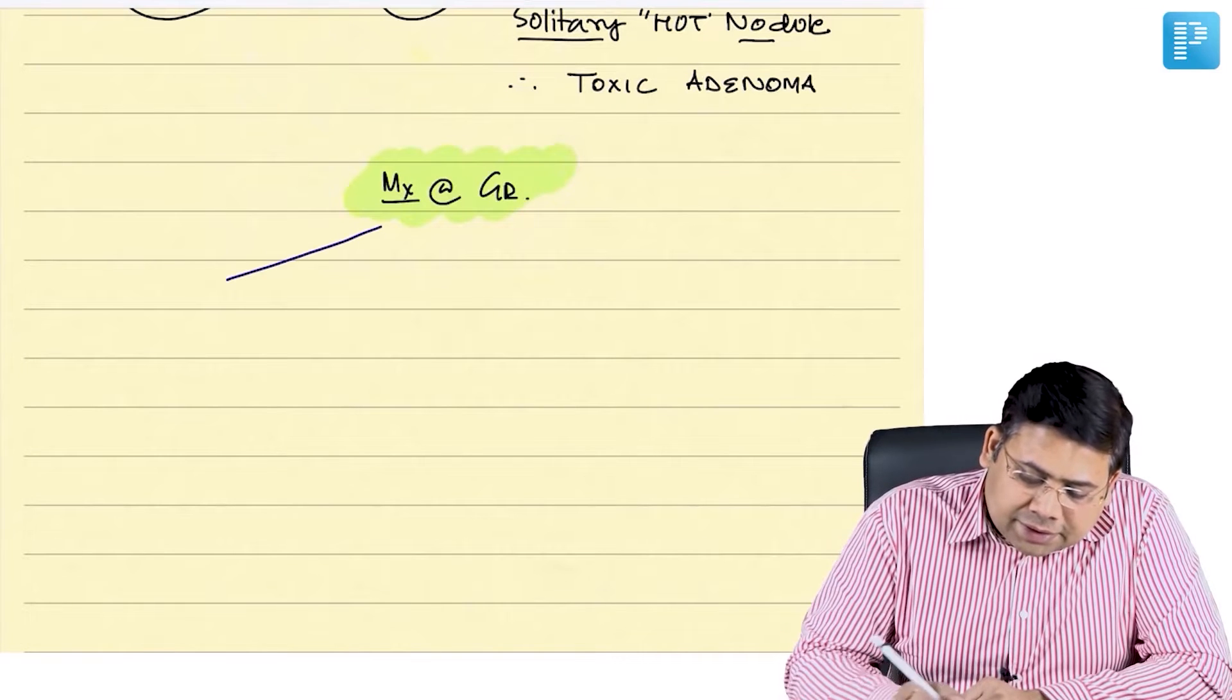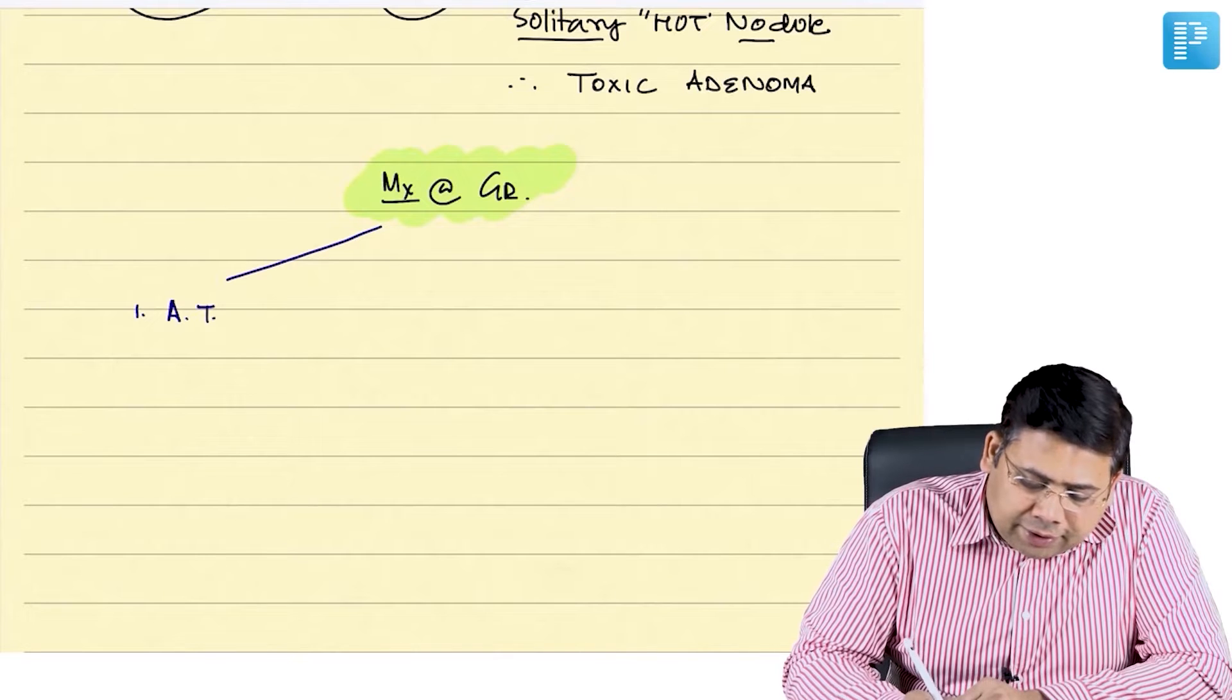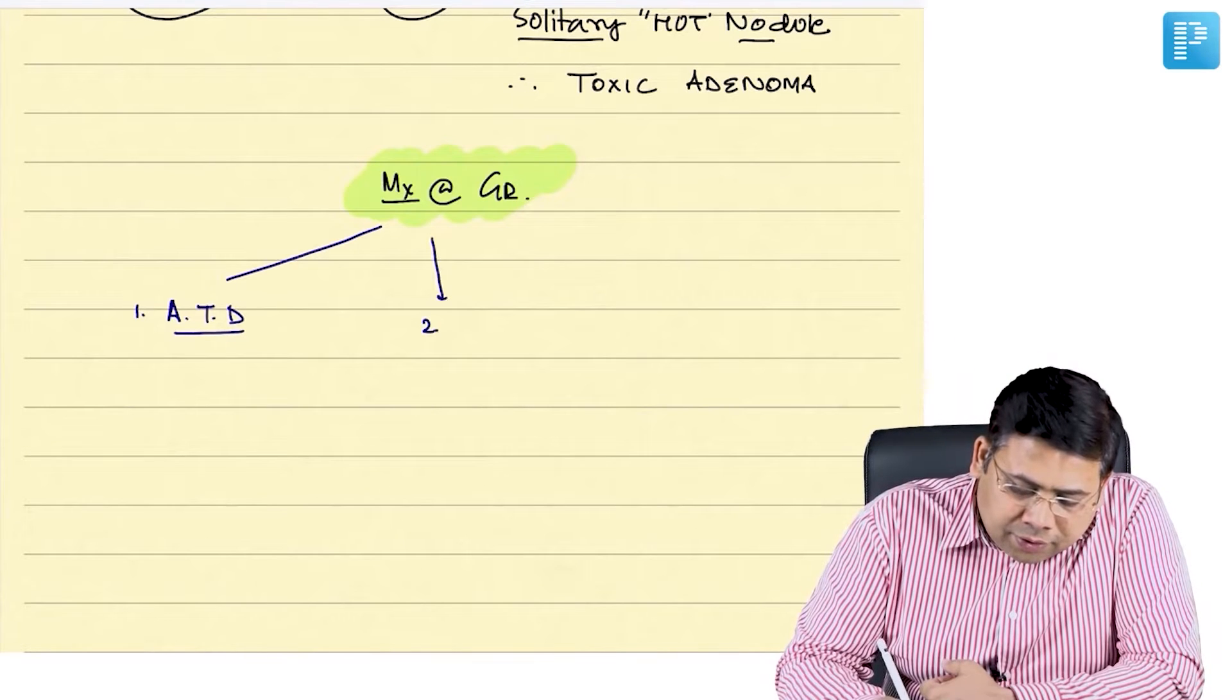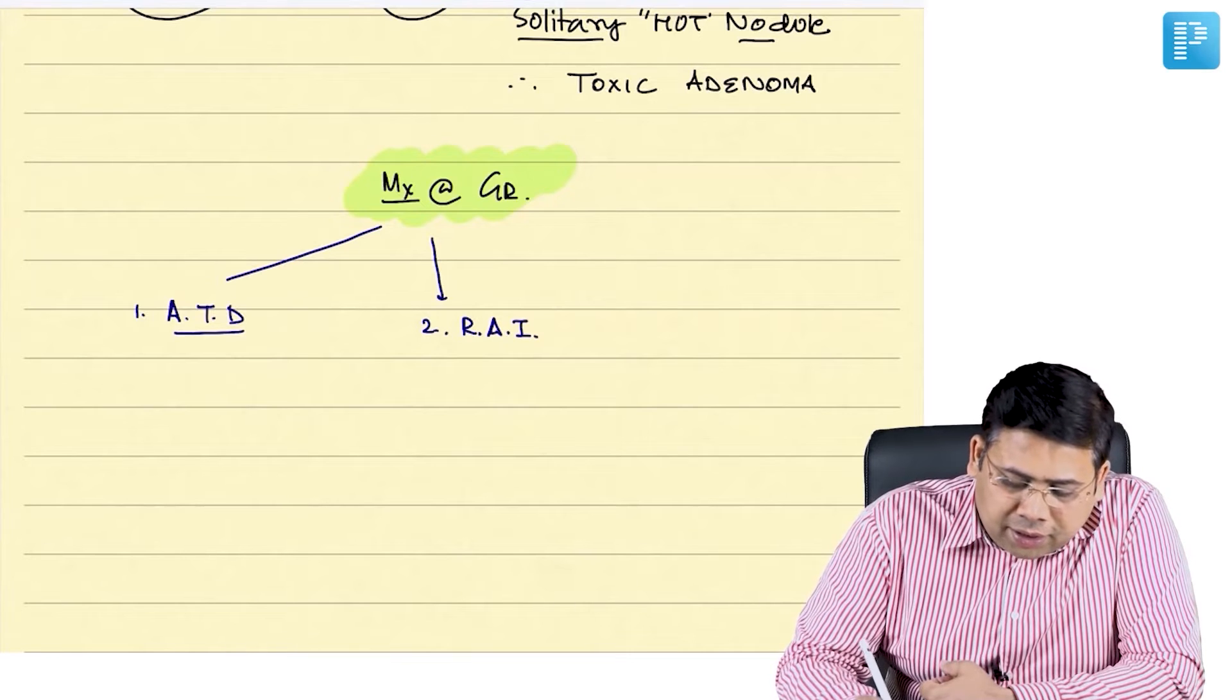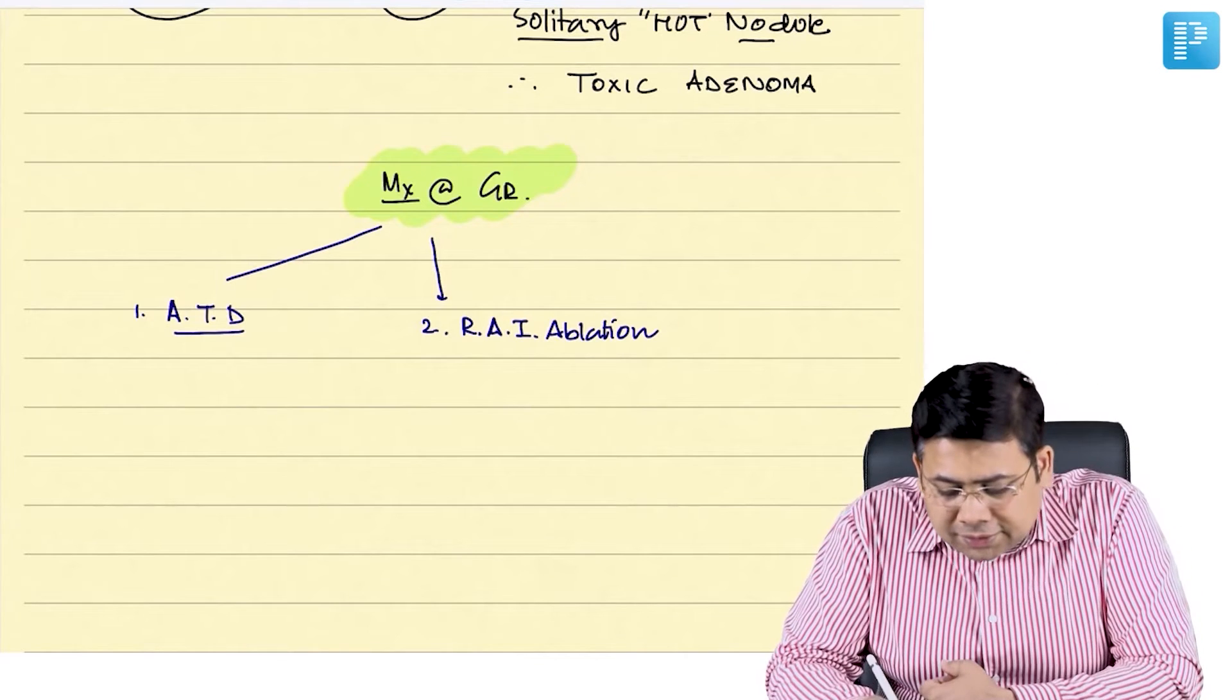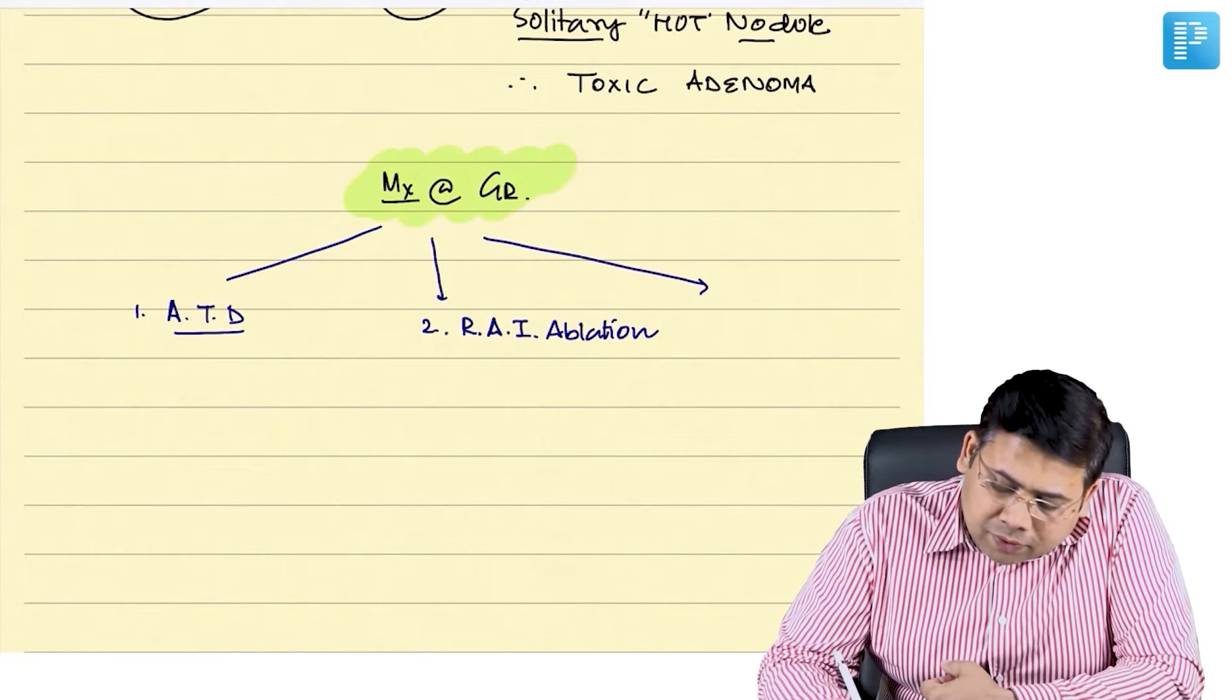The first is the antithyroid drugs. The second pillar is your radioactive iodine ablation. And the third pillar here is your surgery.